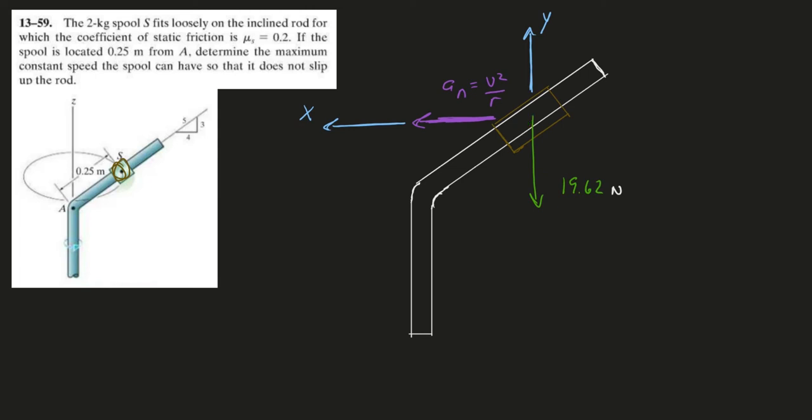Now, the question says, determine the maximum constant speed that this thing can have so that it does not slip up the rod. Again, that makes sense. If we're spinning really fast, this thing's going to want to fly off like this. So, that's the mode we're thinking in. We're thinking in lots of speed instead of little or no speed.